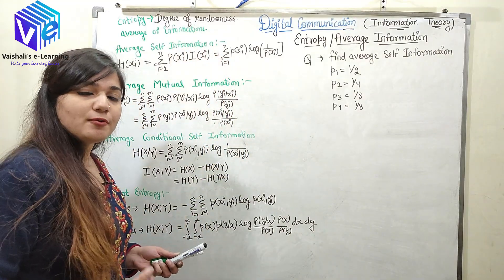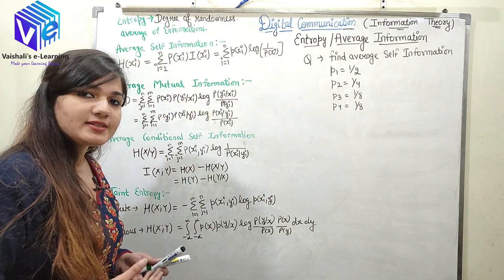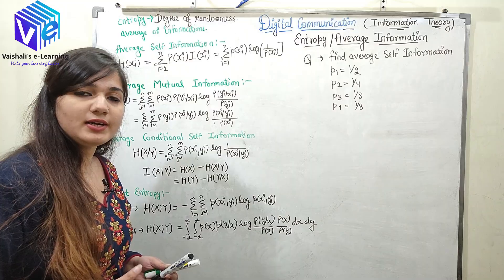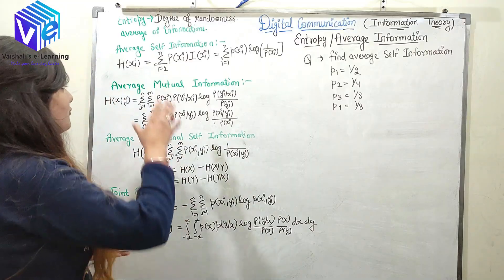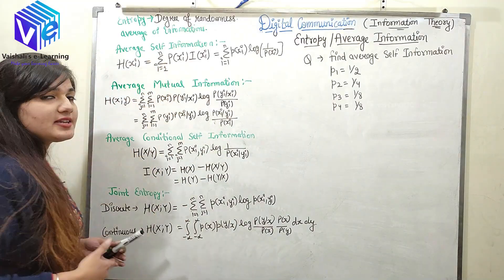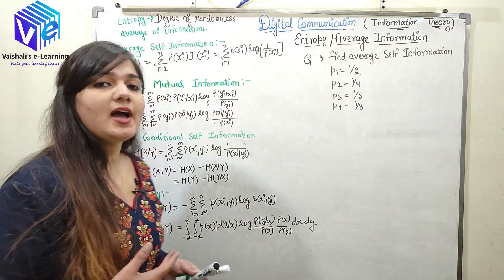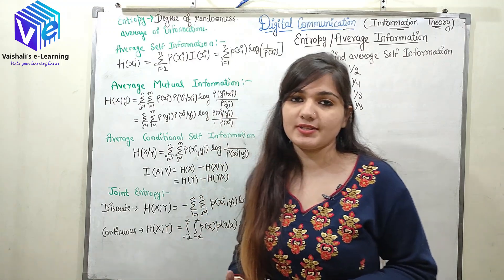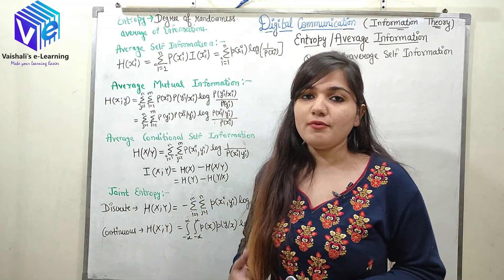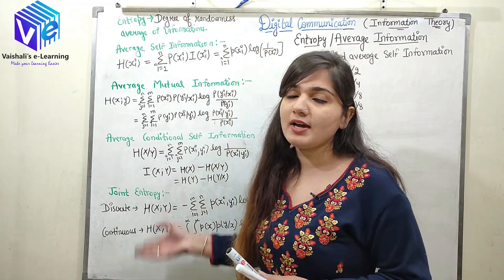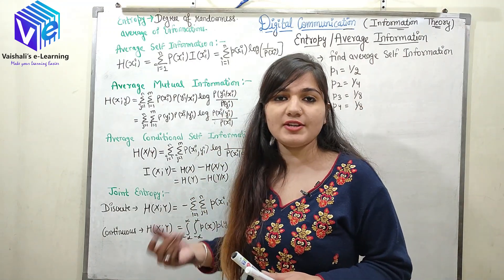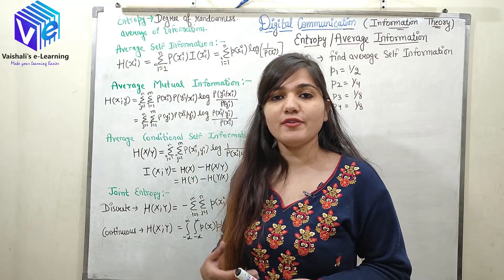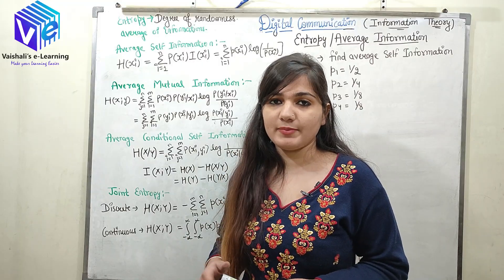Now you understand what entropy is and how to calculate average self-information. There are various types of entropies, just as there are various types of information. We have given the formulas for these various entropies, and we will discuss numerical examples on each of them.